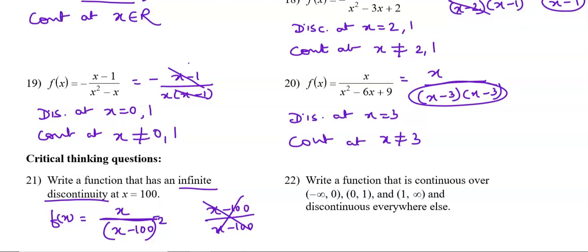Question number 22 asks us to write a function that is continuous over the given intervals: (-∞, 0), (0, 1), and (1, ∞) — all open intervals. This means x must not attain 0 or 1, so the function has to be discontinuous at 0 and at 1. An open interval like (0, 1) means all values from 0 up to but not including 1.